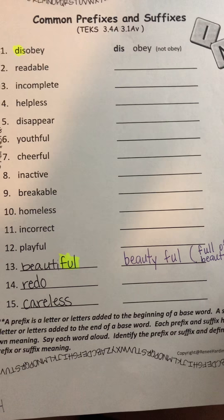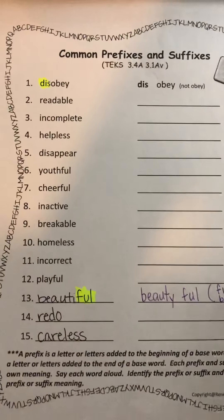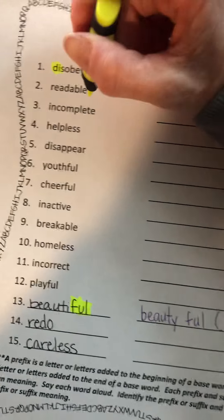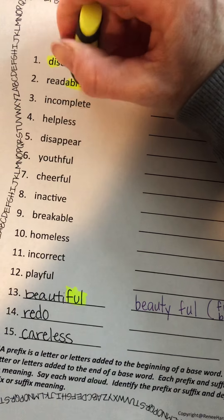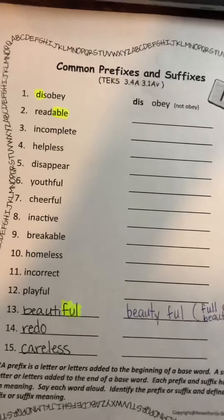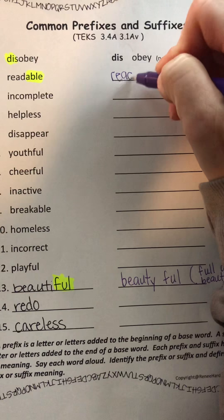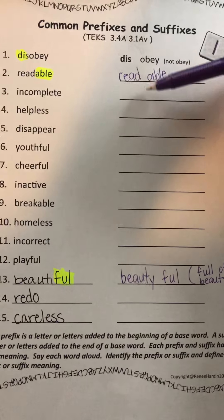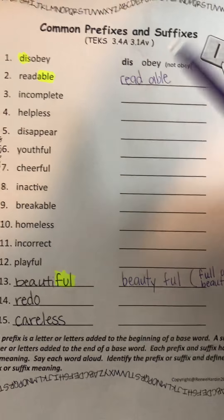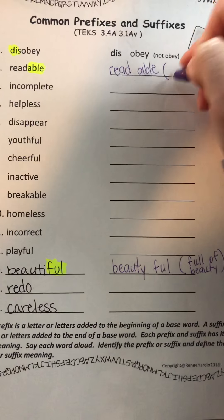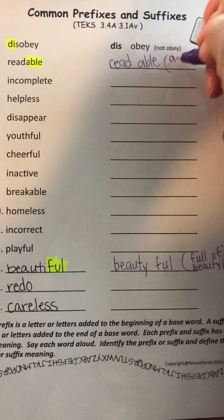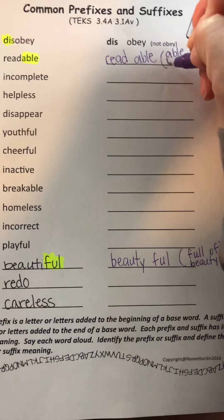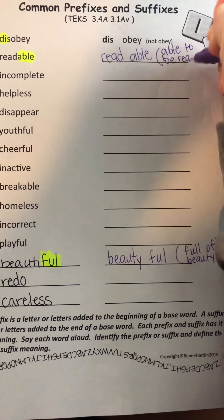Let's go back up here and do 'readable.' It has a suffix: '-able.' You're going to separate those words — you don't have to put a slash between them, just write them separately: 'read' and 'able.' If something is readable, it is able to be read.